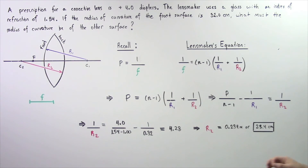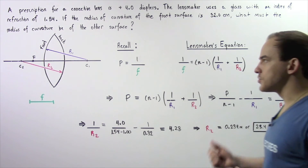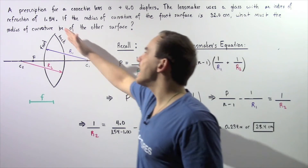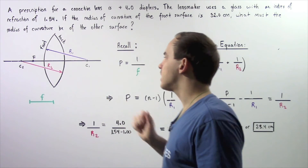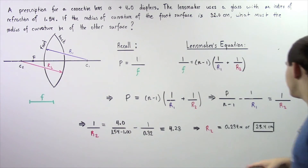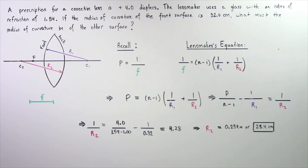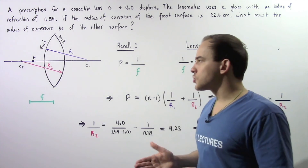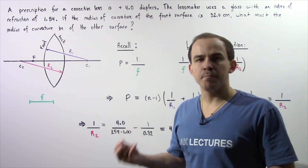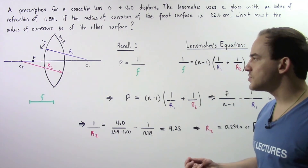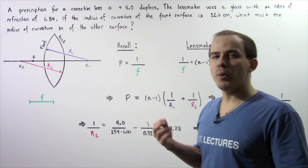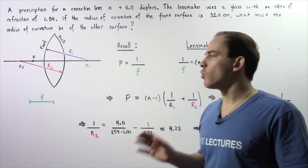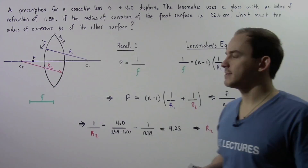The radius of curvature of the back surface of our double convex lens is equal to positive 23.4 centimeters. Remember, the radius of curvature is always positive for convex lenses and always negative for concave lenses.